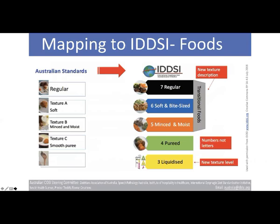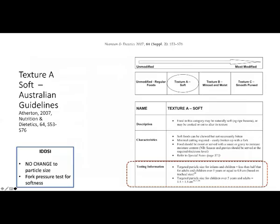In terms of mapping for foods from Australian standards to IDDSI: we had Regular (Texture A), Soft (Texture B), Minced Moist (Texture C), and Smooth Puree. With IDDSI we retain most of those labels — Regular, Soft and Bite-Sized, Minced and Moist, and Pureed — and we have a new texture level called 'Liquidized,' which was known to be used frequently in palliative care. We lose the A, B, C labels and replace them with numbers, add colours, and introduce a new description: Transitional Foods.